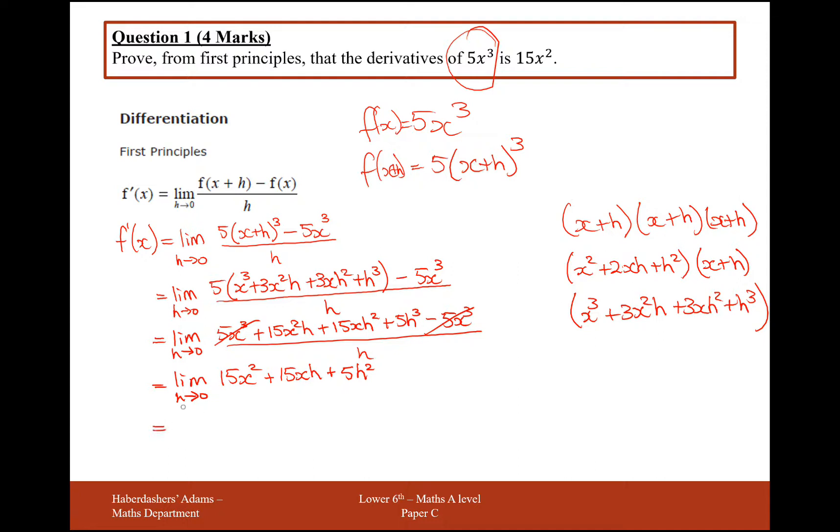So now I'm going to involve the limit thing here. This has just been lingering at the front here for a little while. So what I'm going to do now is incorporate this into the expression. So 15x² as h tends towards 0, well, that doesn't involve h, so that's still 15x².